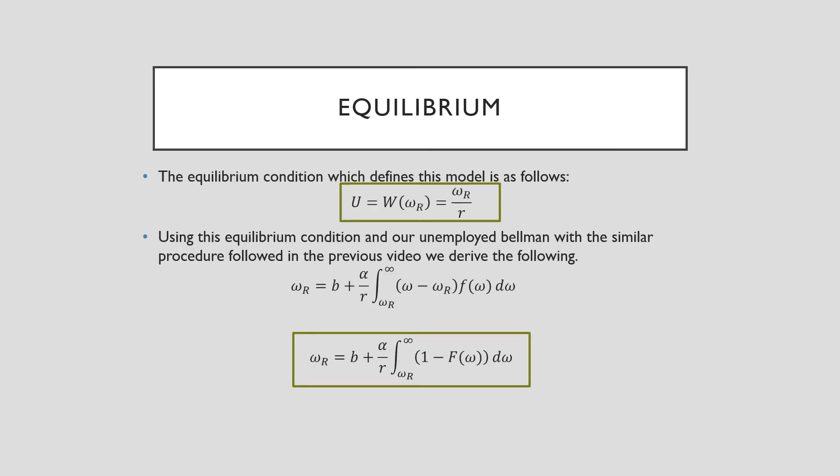So the equilibrium condition which defines this model is as follows: U is equal to W(omega_r), which is our reservation wage, is equal to our reservation wage all over this r, which is this subjective discount factor. Using this equilibrium condition and our previous Bellman with a similar procedure in the previous steps, we derive the following. So we just have this equation which characterizes our Bellman here.